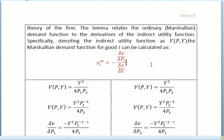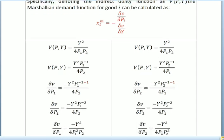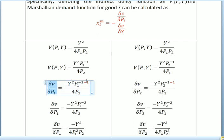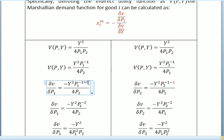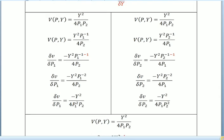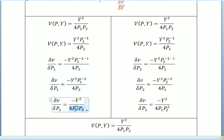We plug into the formula. We differentiate V with respect to p1. V is given as y² over 4p1p2. We bring p1 above, so p1 becomes p1 to the power of 1, and when we bring it above it becomes negative. We differentiate to get negative y²·p1^(−1−1) over 4p2, giving us negative y²·p1^(−2) over 4p2.